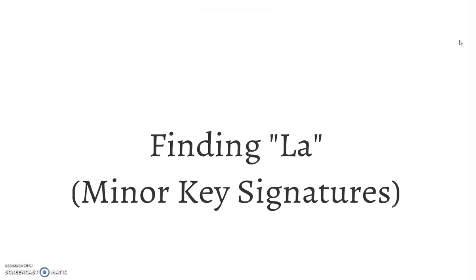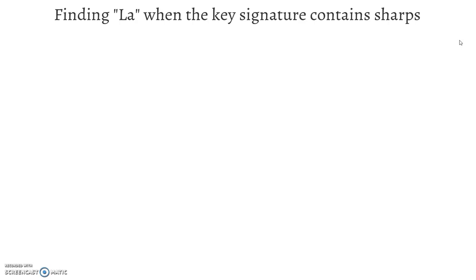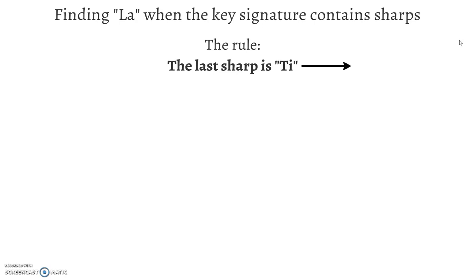Today you're going to learn how to find La, and that is the first step in identifying the name of a minor key signature. When your key signature contains sharps, the rule is that the last sharp is Ti. The last sharp is the one farthest to the right, farthest away from the clef sign.